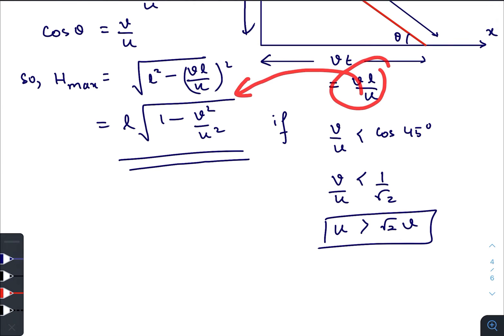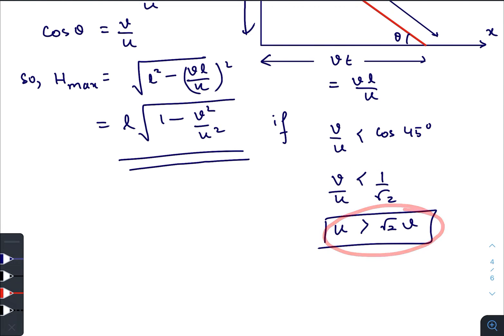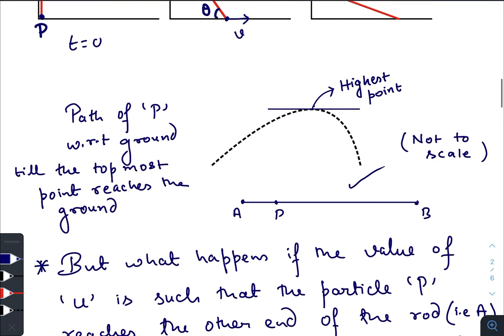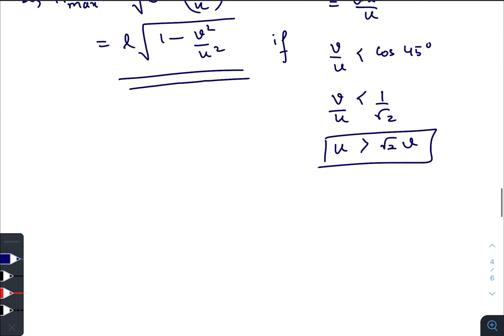This maximum height applies when v/u < cos(45°), that is v/u < 1/√2, which means u > √2·v. So if the speed of the beetle relative to the rod is greater than √2·v, it will reach point A before completing its actual trajectory or before reaching the highest point observed by a person on the ground. This is the first answer.